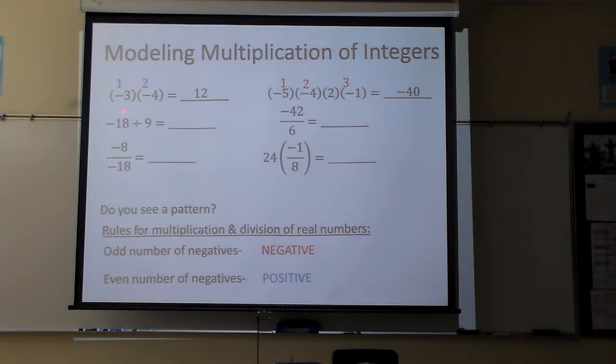Now division is the same thing as multiplication, except dividing. Here I have one negative. So guess what my answer's going to be? That's right. It's going to be negative. And my 18 divided by 9 makes it 2, so it's negative 2.